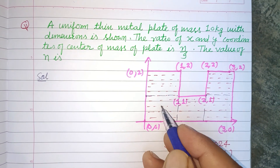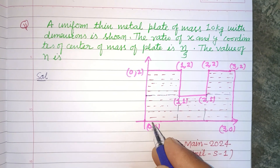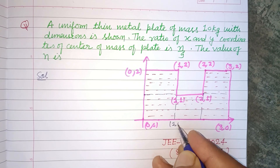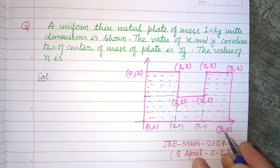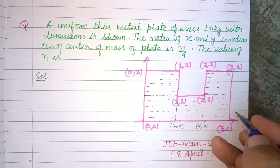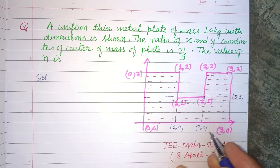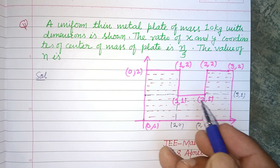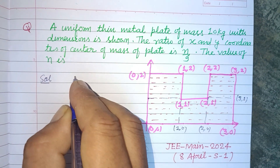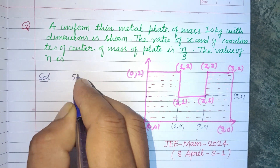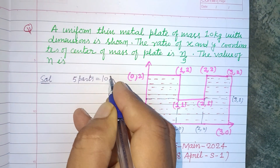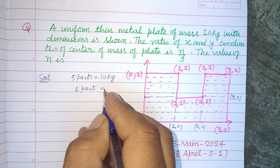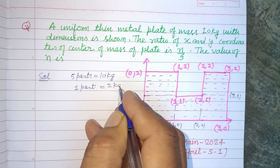There are 5 parts, and they have the coordinates: (1, 0), (2, 0), and (3, 1). Since the mass is uniformly distributed across 5 parts and total mass is 10 kg, each part contains 2 kg mass.